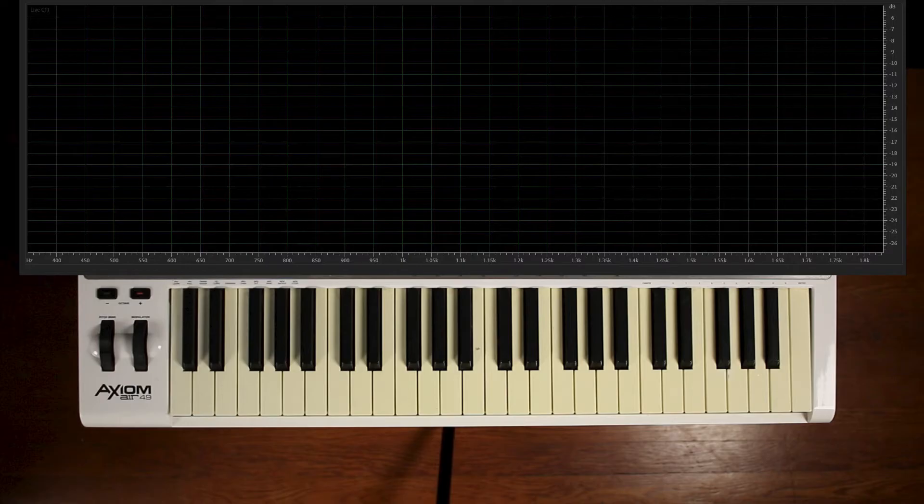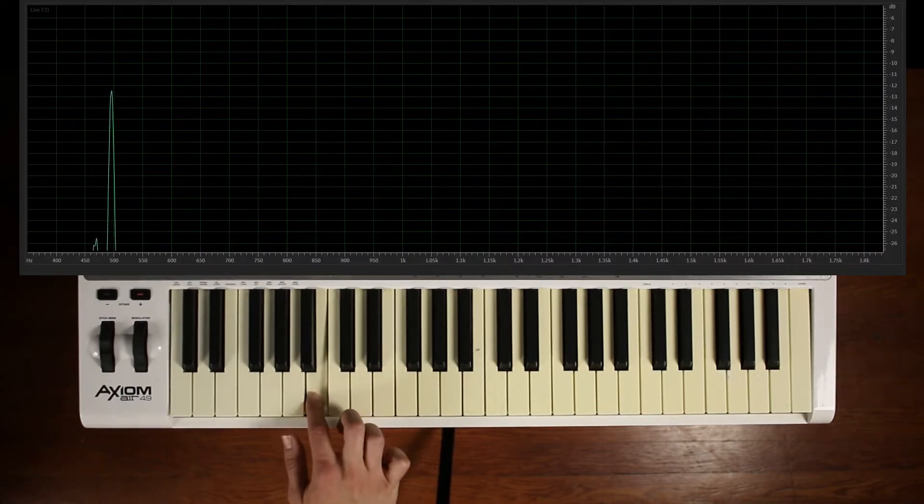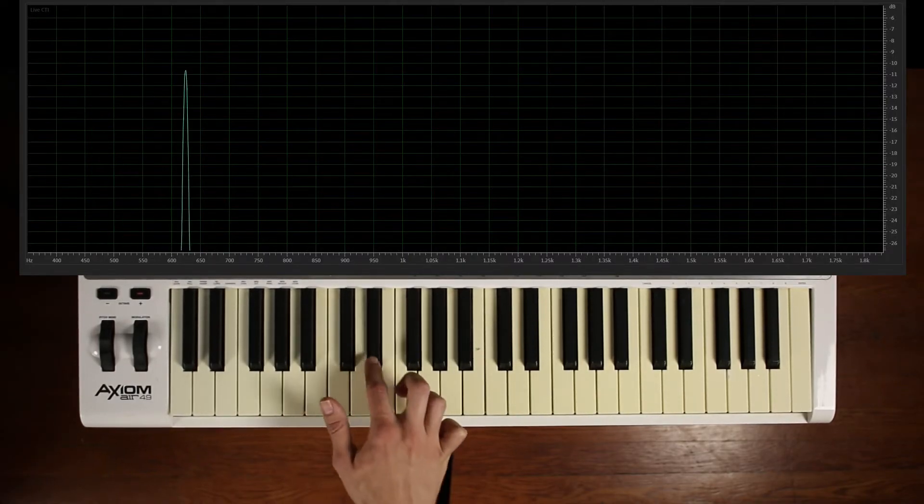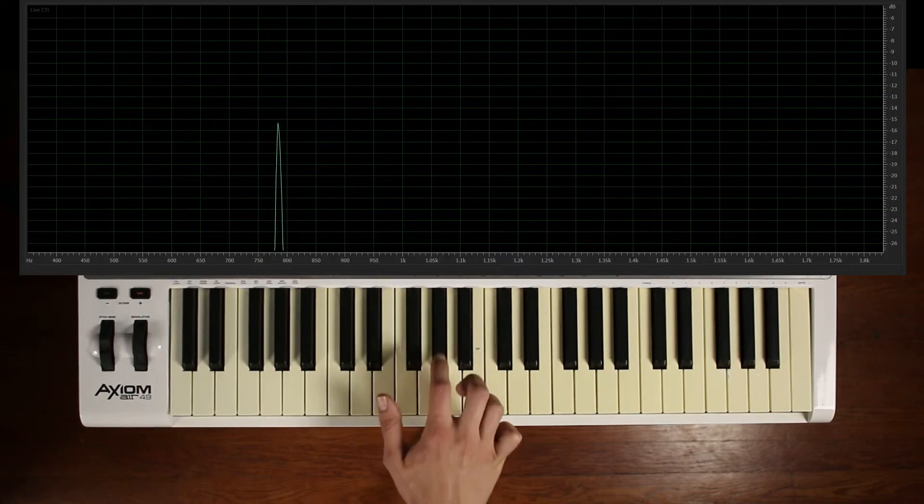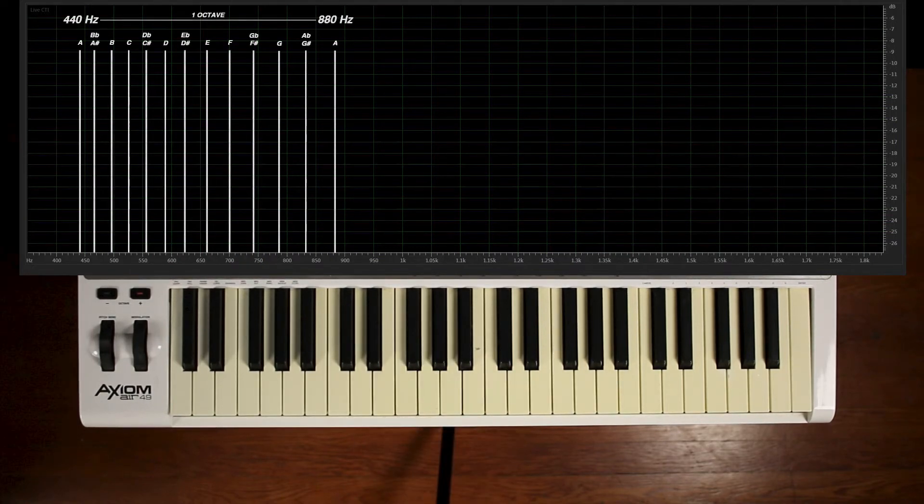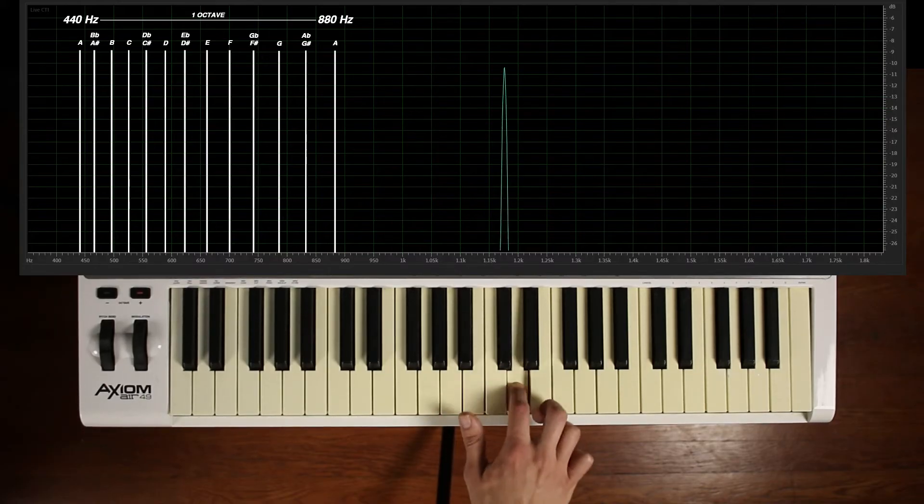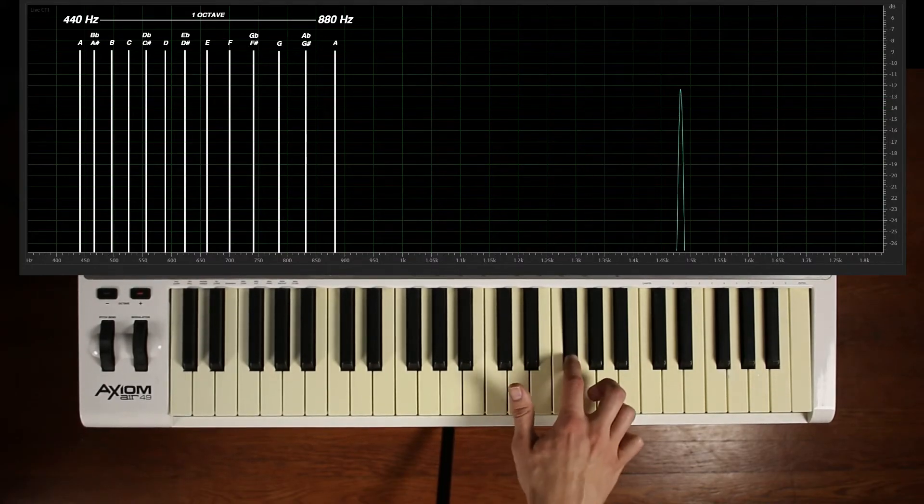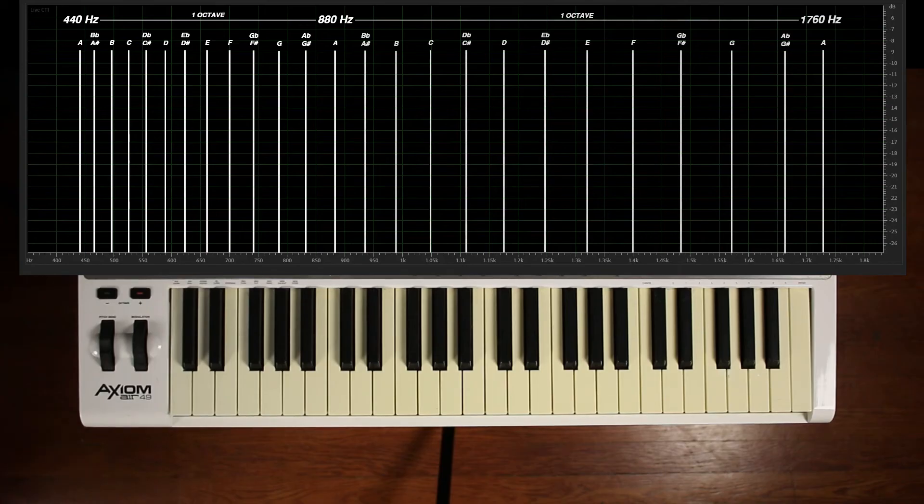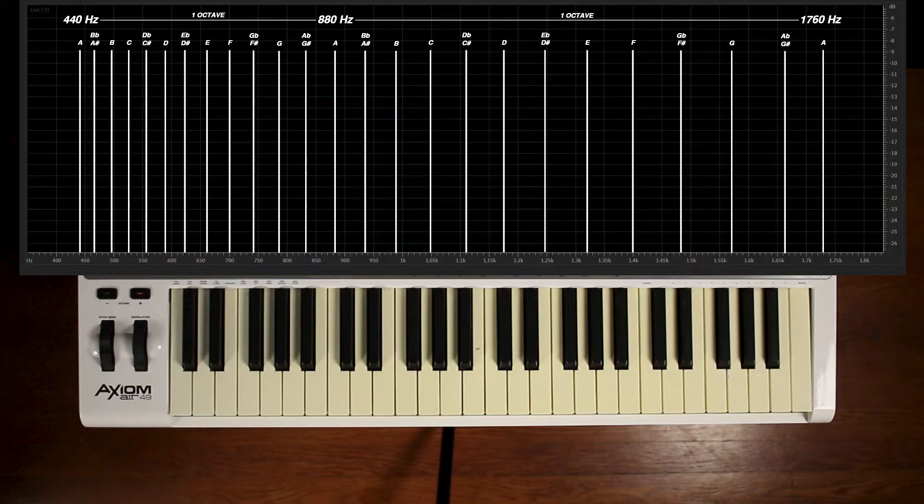In western music, there are 12 notes between 440 hertz and 880 hertz. There are also 12 notes between 880 hertz and 1760 hertz. We perceive these intervals as equal, even though the first interval is much smaller than the second when viewed on a linear scale.